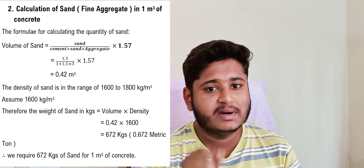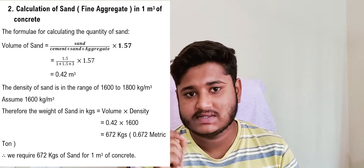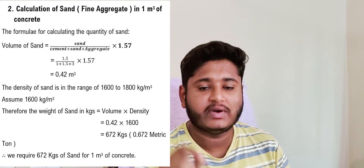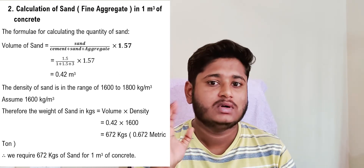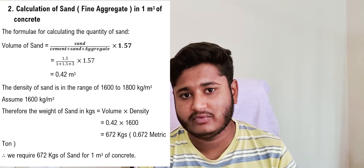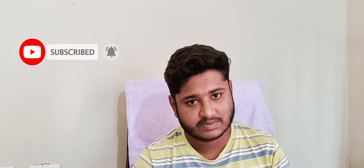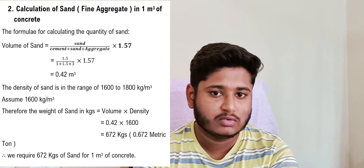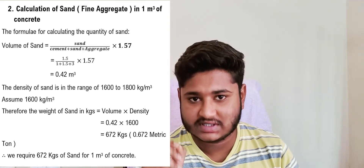Next, calculation of sand for 1 cubic meter of concrete. The formula is: sand ÷ (cement + sand + aggregate) × 1.57 = 1.5 ÷ (1 + 1.5 + 3) × 1.57 = 0.42 cubic meters. The density of sand ranges from 1600 to 1800 kg per cubic meter; we assume 1600 kg/m³. So, 0.42 × 1600 = 672 kg of sand is required.